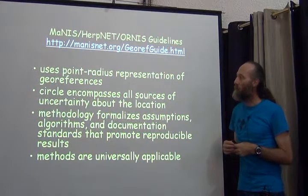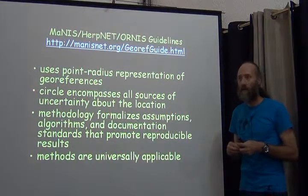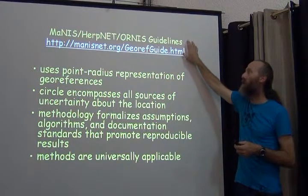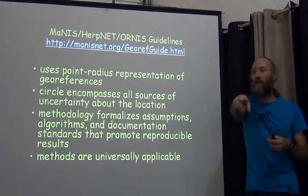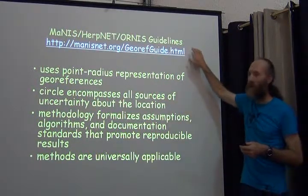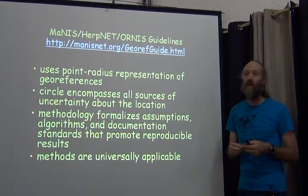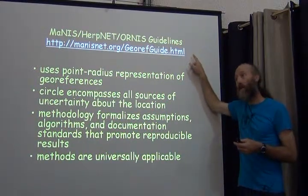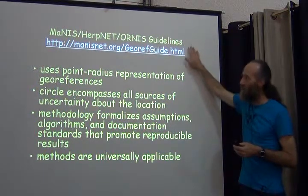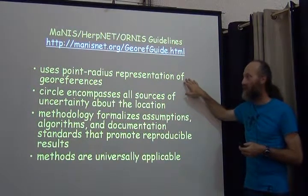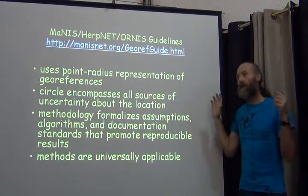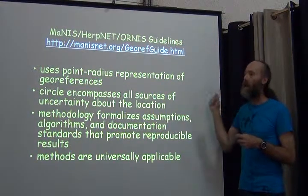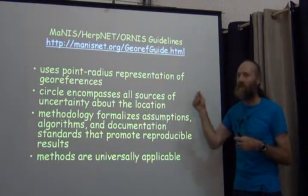All of the guidelines in the most commonly used protocols for georeferencing use as their source the original document called the Manus-Herpnet-Ornus Guidelines. The quick reference guide and the book for georeferencing best practices are both based on these same guidelines, as are all the automated georeferencing tools. This is fundamental. It uses a point-radius representation for georeferences, where the circle circumscribes all sources of uncertainty about the location — meaning the locality is certainly inside the circle.